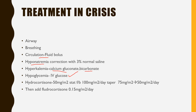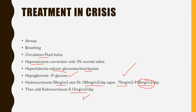Hydrocortisone: in crisis, start at 50 mg/m² IV stat. Then continue with 100 mg/m²/day in divided doses. On day 2, reduce to 75 mg/m² and on day 3, 50 mg/m² per day. Once you reach the 50 mg/m²/day mark, add fludrocortisone 0.15 mg/m²/day to cover the deficiencies in both glucocorticoid and mineralocorticoid.